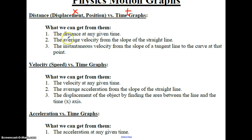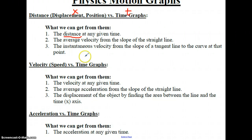What can we get from them? The easiest thing we can get is the distance at any given time, just by going down to the time axis, going up to the best fit line, and then over to the left to find out how far it's traveled at some given time. We can also get the average velocity from the slope of the straight line — these two key words go together: average velocity and slope on a distance-time graph.